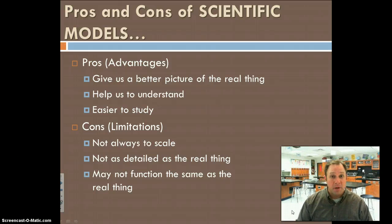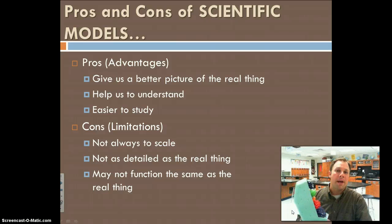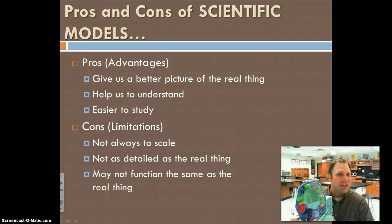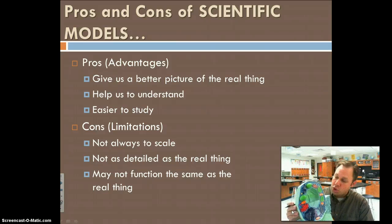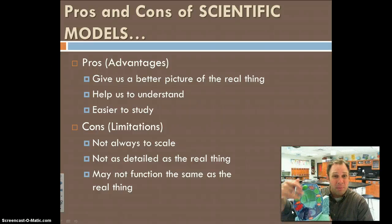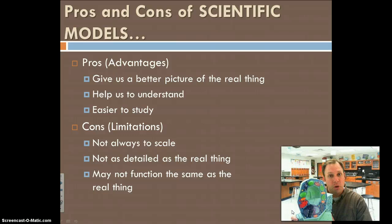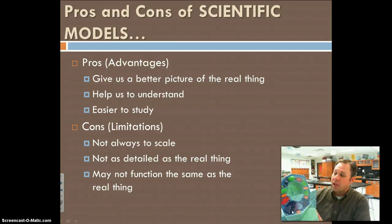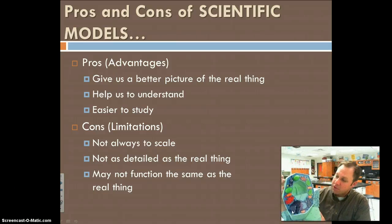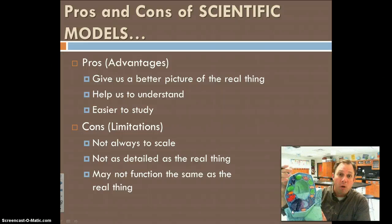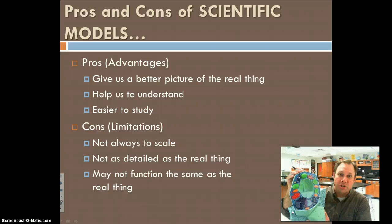Number one, they give us a better picture of the real thing. Again, if I'm going back to my model of the cell, cells are very small. You've seen them underneath the microscope. Usually in a cell, you can make out the nucleus down here, and you can see that, but a lot of the other parts you can't see. They're hard to see. You have to have a really good microscope, and even then, sometimes they're hard to see. If I make a model, I can build this model based upon what I know and what other researchers have found, and then now it's easier to analyze. It's easier to look at.